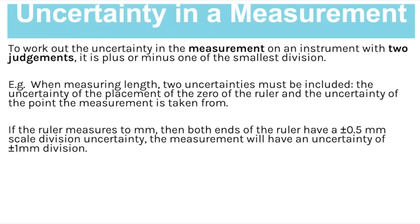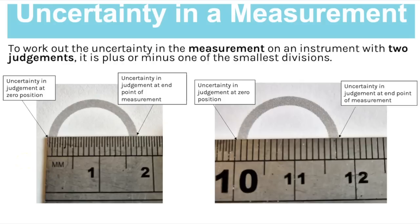For a measurement with two judgments, you work out both uncertainties: the uncertainty of the placement of zero on the ruler, and the uncertainty of the point the measurement is taken from. If the ruler measures to one millimetre, both ends have a ±0.5mm scale division uncertainty. Adding those uncertainties from both ends of the ruler gives an overall uncertainty on the measurement of ±1mm.